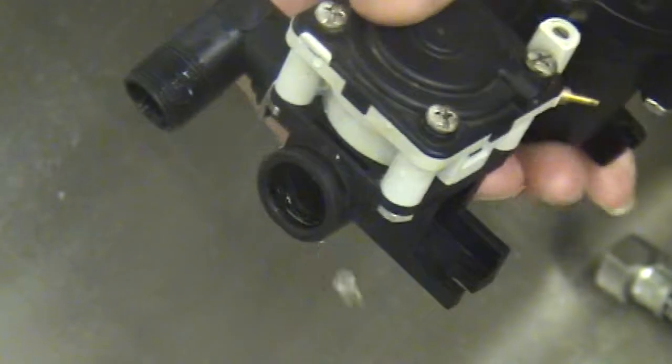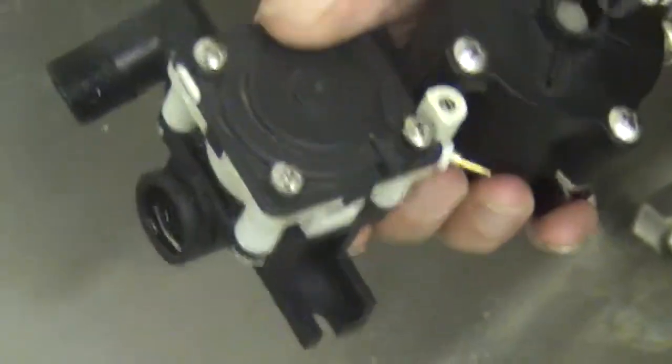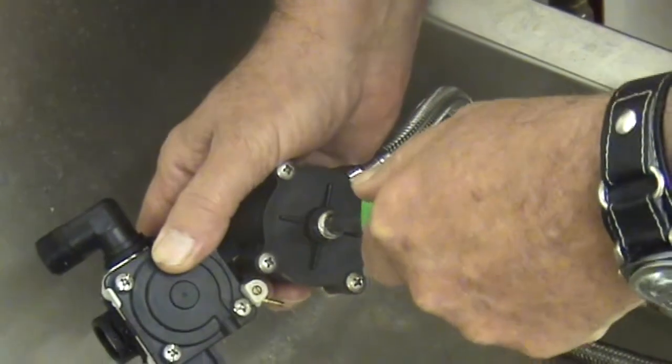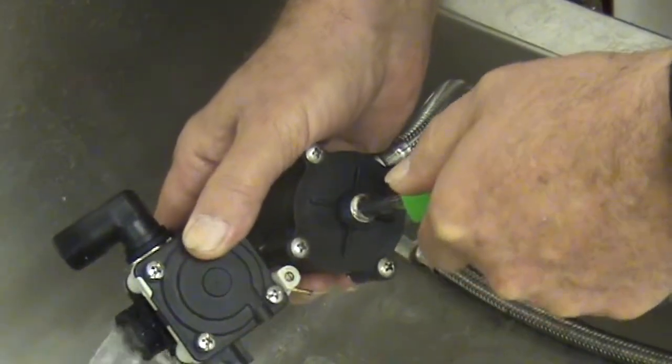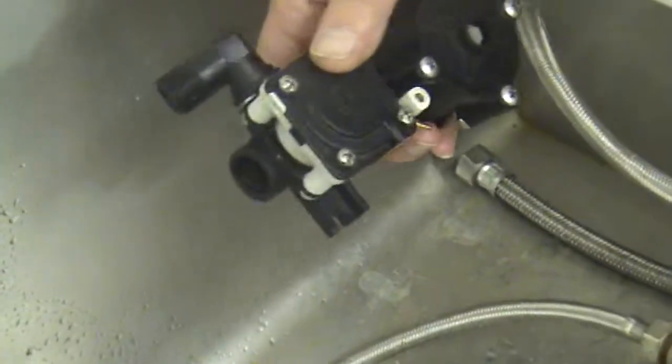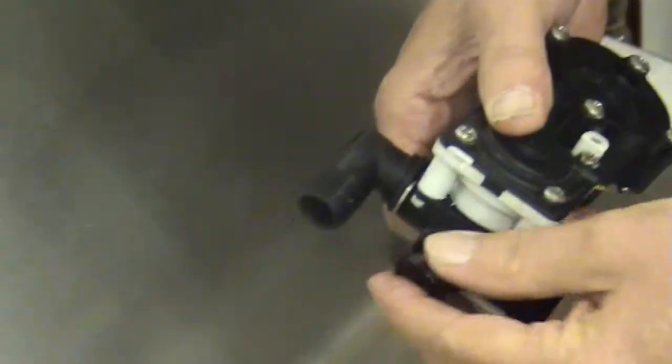Now, the next test, we open the check stop just slightly to make sure that we're getting water through the valve. If we're getting water through the valve, we know the check stop is okay at that point. So we can reassemble this.